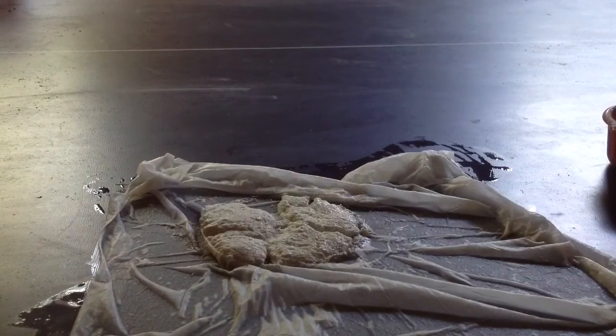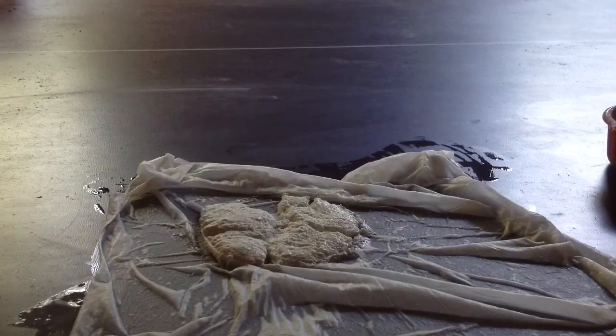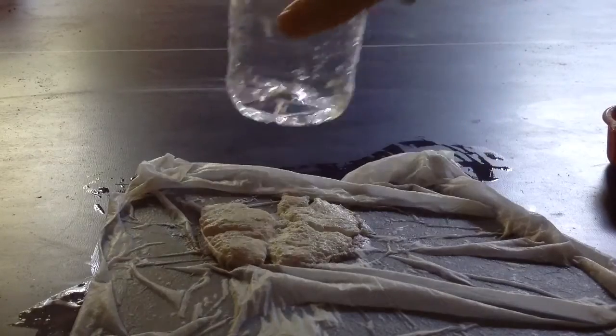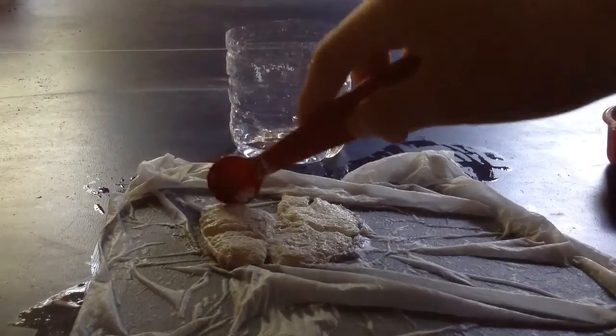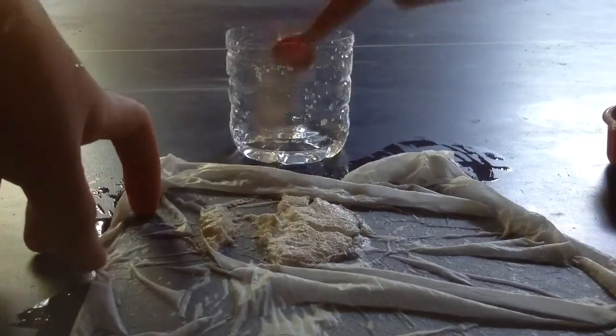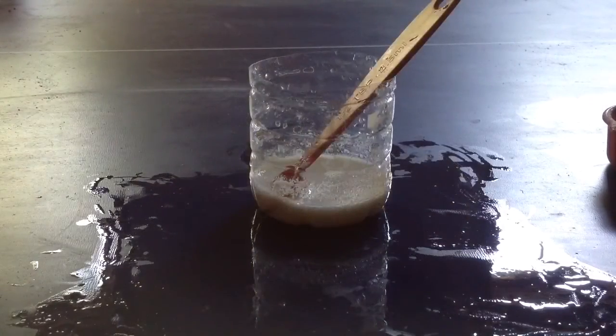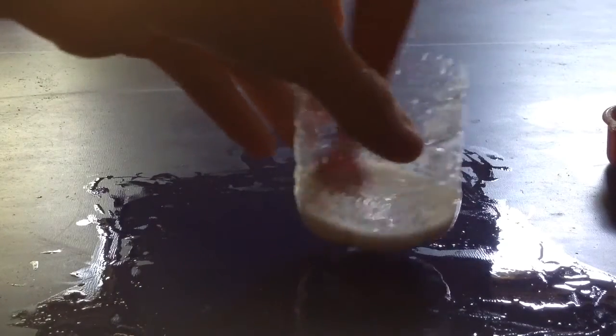So after you've pressed out most of the moisture from the filtrate, you take 15 milliliters of water, and you scoop up the filtrate and put it in. So you put it in the water, and then you take a spoon and you mix it well.